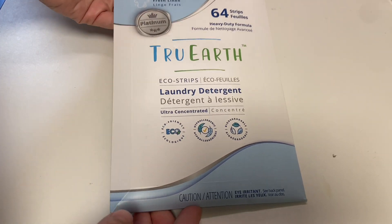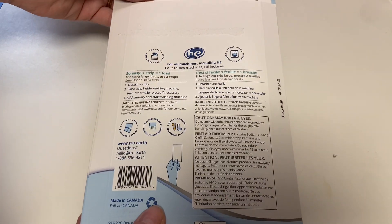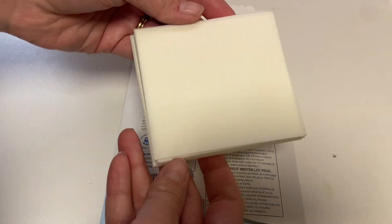These are the Tru Earth Platinum laundry detergent sheets. These are sheets that you just throw in the washing machine and it's your laundry detergent. They soap up when the water mixes with them.